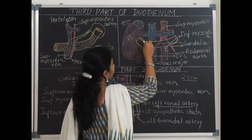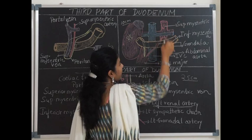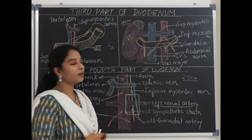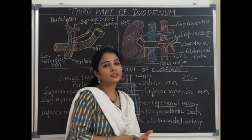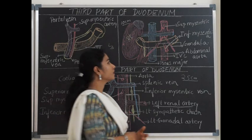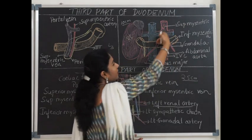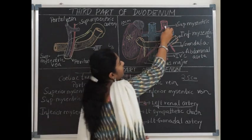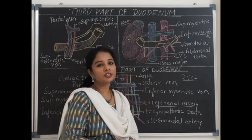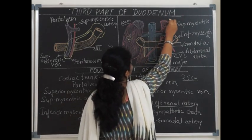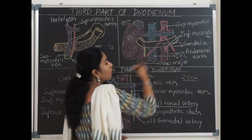The posterior relations of the third part include the right ureter, right psoas major, inferior vena cava, and abdominal aorta with its branches — including right and left gonadal arteries (testicular in males, ovarian in females) and the origin of the inferior mesenteric artery. The superior mesenteric artery originates higher and crosses anteriorly the third part of duodenum. Superiorly it is related to the head, neck, and uncinate process of the pancreas; inferiorly to the coils of small intestine.